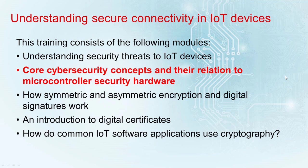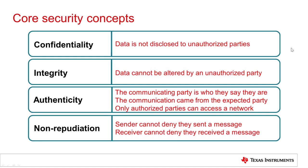This should assist you in understanding why microcontrollers have certain security features and how they are used in conjunction with firmware to enforce security on an embedded or IoT device. There are three fundamental concepts that are essential to secure communication. The first is confidentiality, which means that your data cannot be eavesdropped by unauthorized parties. The second is integrity, which means a third party cannot alter your data.